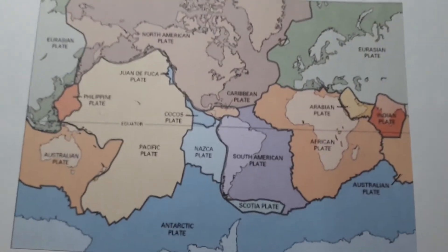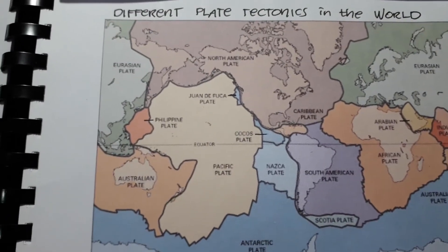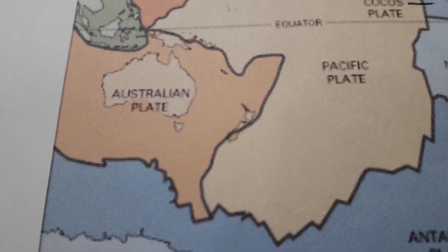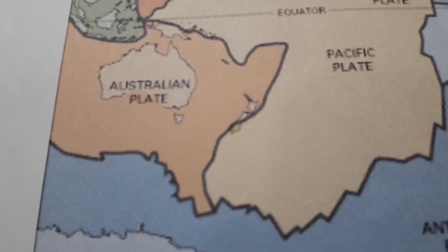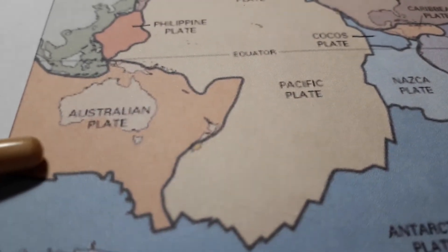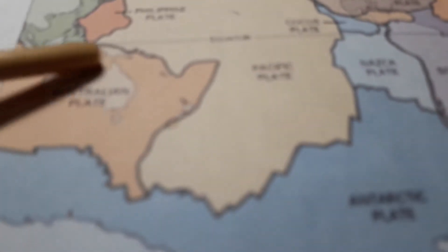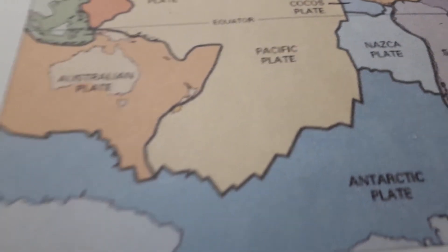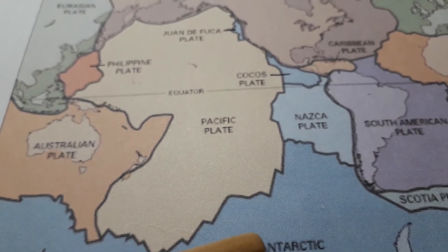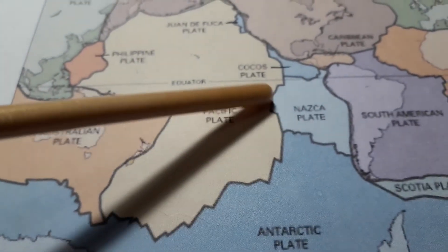Kung titignan nyo, mapansin nyo po na may dalawang kulay sa bawat plate. Tingnan mo Australian plate — sa Australian plate na ito may dark orange at saka may lighter sa loob. Ibig sabihin po, ang bansa ng Australia ay nakatungtong sa buong Australian plate. Ang ibig sabihin nito — sa sides ito, dagat yan lahat. Ito yung lupa ng Australia yung maliit na yan, so dagat yan sa paligid. Yung pacific plate — wala namang lupa sa Pacific, may mga island nga pero maliit lang — yung buong ito ay covered by the ocean.